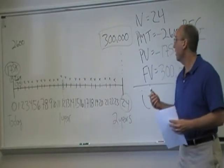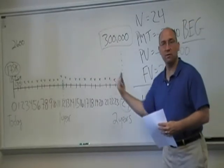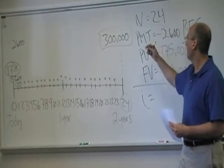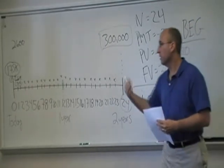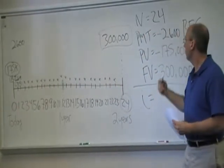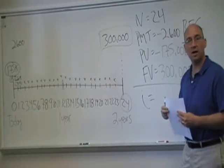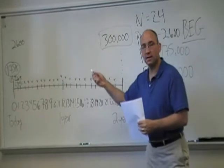The reason it works with the calculator, not only N is 24 because there's 24 payments with the begin mode telling it times zero to times 23. PV tells it an extra something at time zero.